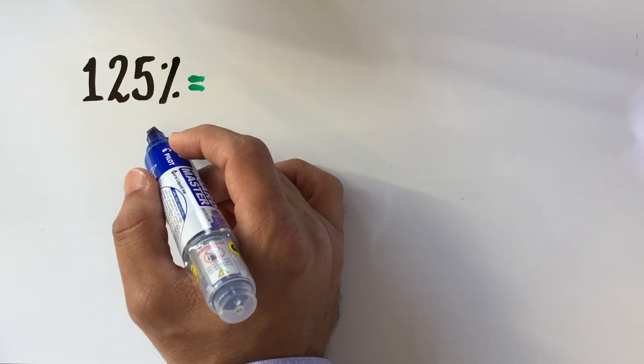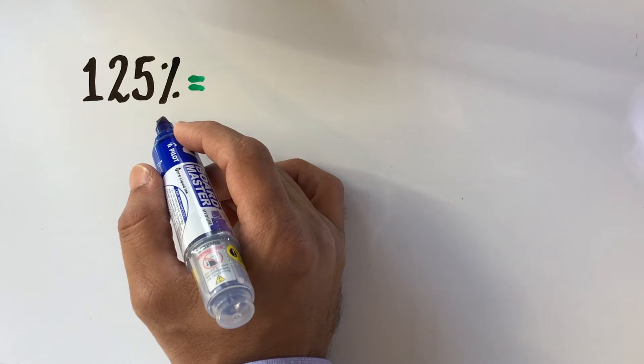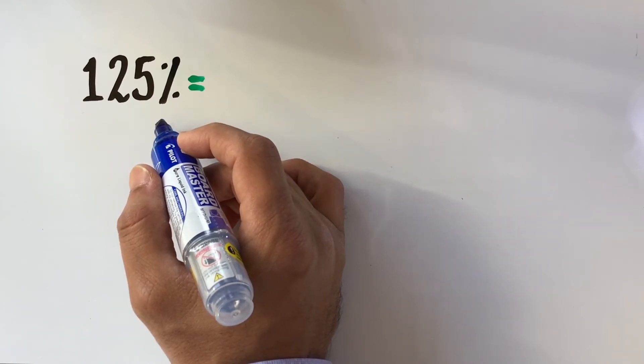In this example, we have 125% which is greater than 100% and therefore the decimal form will be greater than 1.